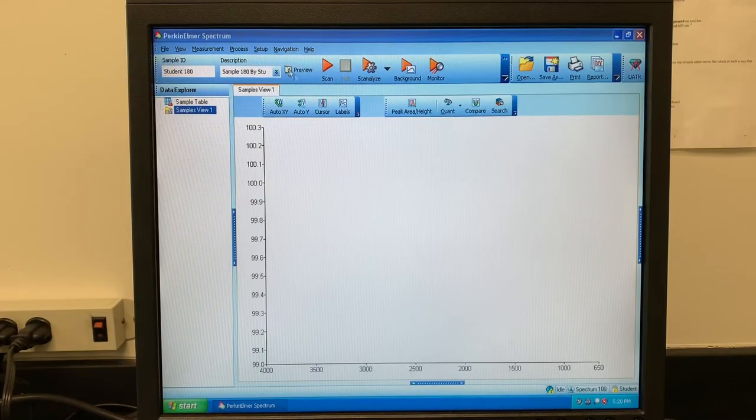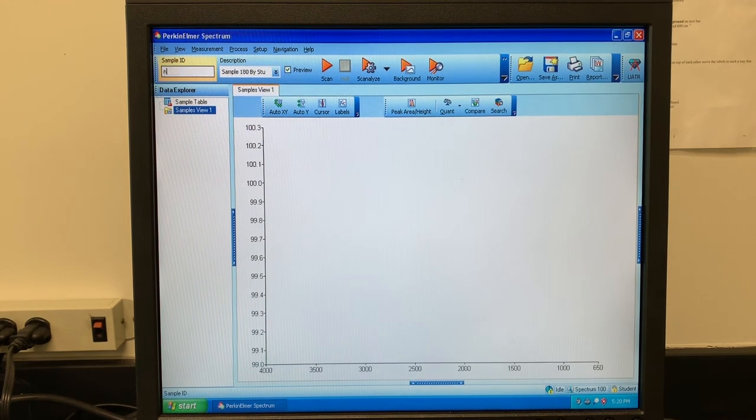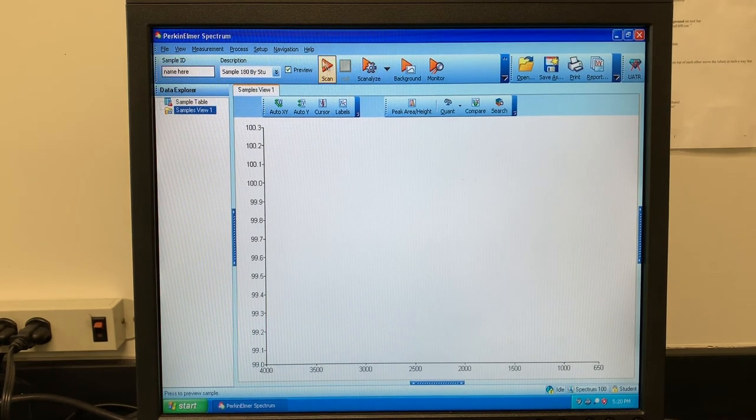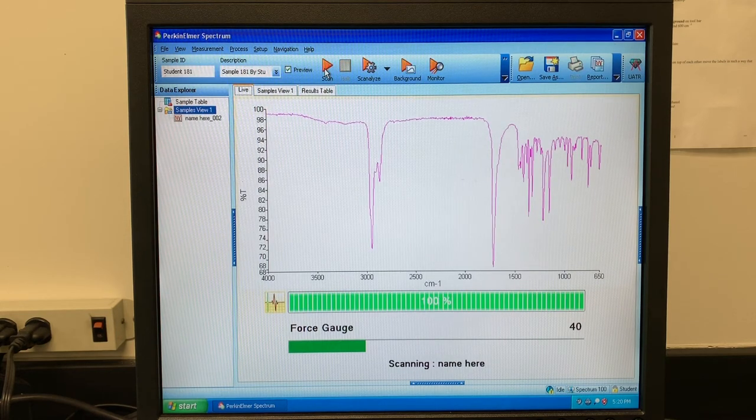Then, assuming your instructor has already done the background, you will type your name under sample ID at the top left corner, click scan, click scan again, and a few minutes later you will have a spectrum.